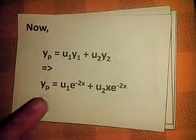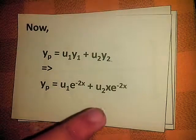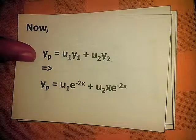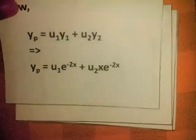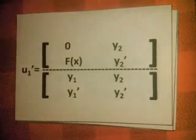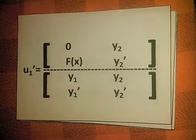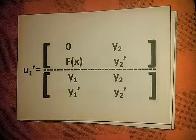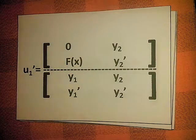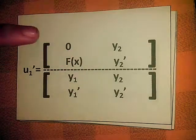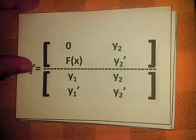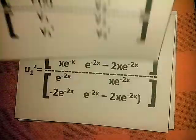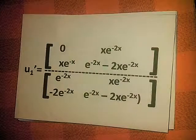In order to get u1 and u2, we must first get u1' and u2'. This is how you will get u1' — substituting the values into the Wronskian setup.